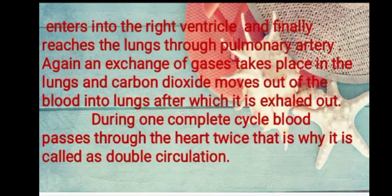Two vena cavas put carbon dioxide-rich blood into the right auricle. From the right auricle, blood enters the right ventricle and finally reaches the lungs through the pulmonary artery. An exchange of gases takes place in the lungs and carbon dioxide moves out of the blood into the lungs, after which it is exhaled out. During one complete cycle, blood passes through the heart twice, which is why it is called double circulation.